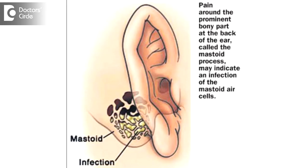Sclerosis of the mastoid essentially means that there's a lack of ventilation or aeration in the mastoid air spaces. Mastoid air spaces are spaces found within the bone which houses the ear canal, ear drums, ear membranes, and brain.